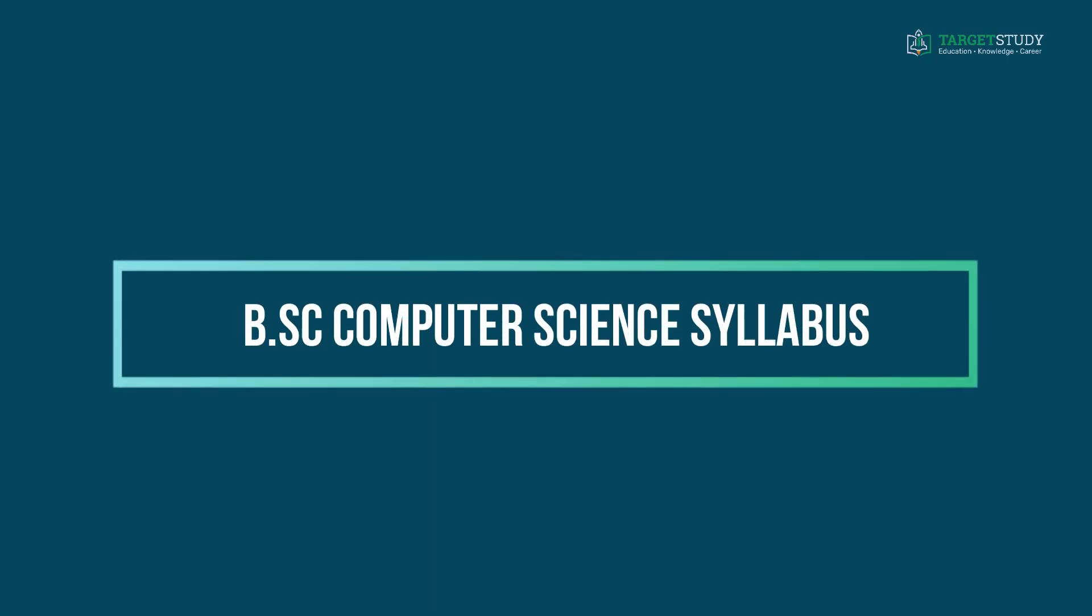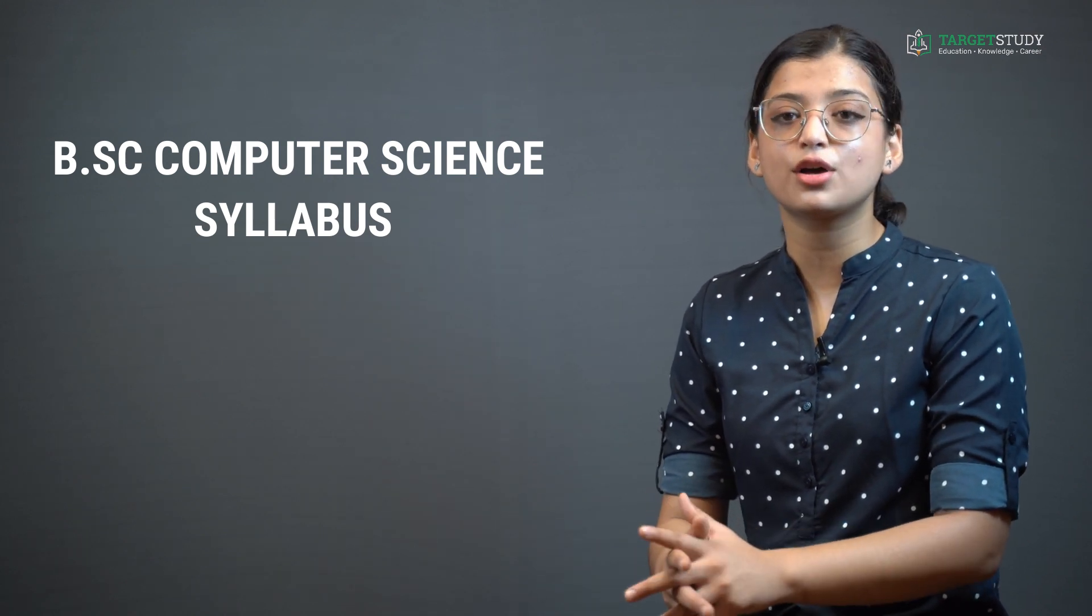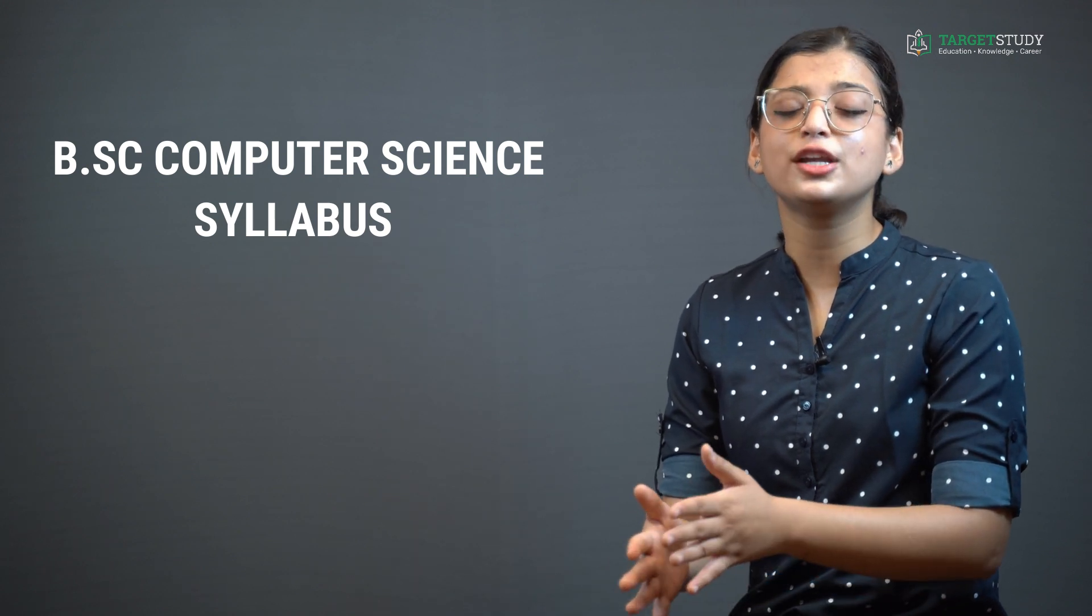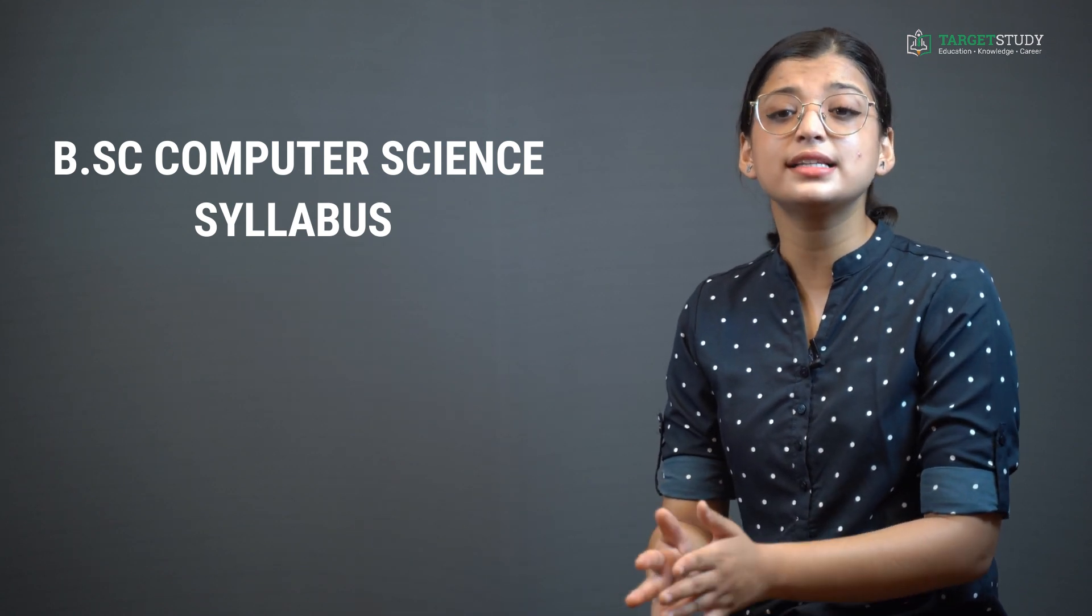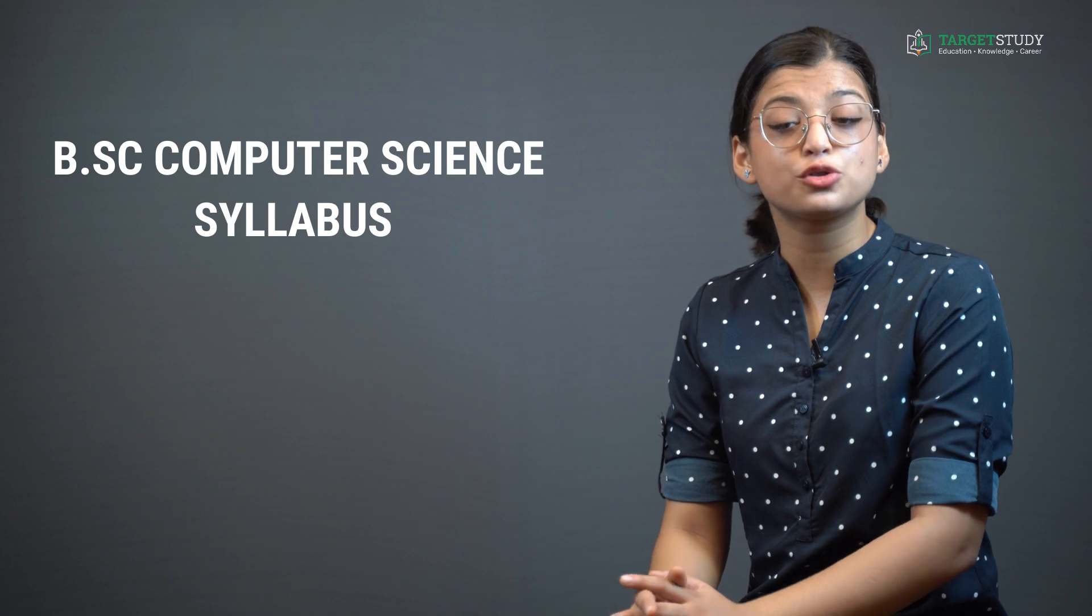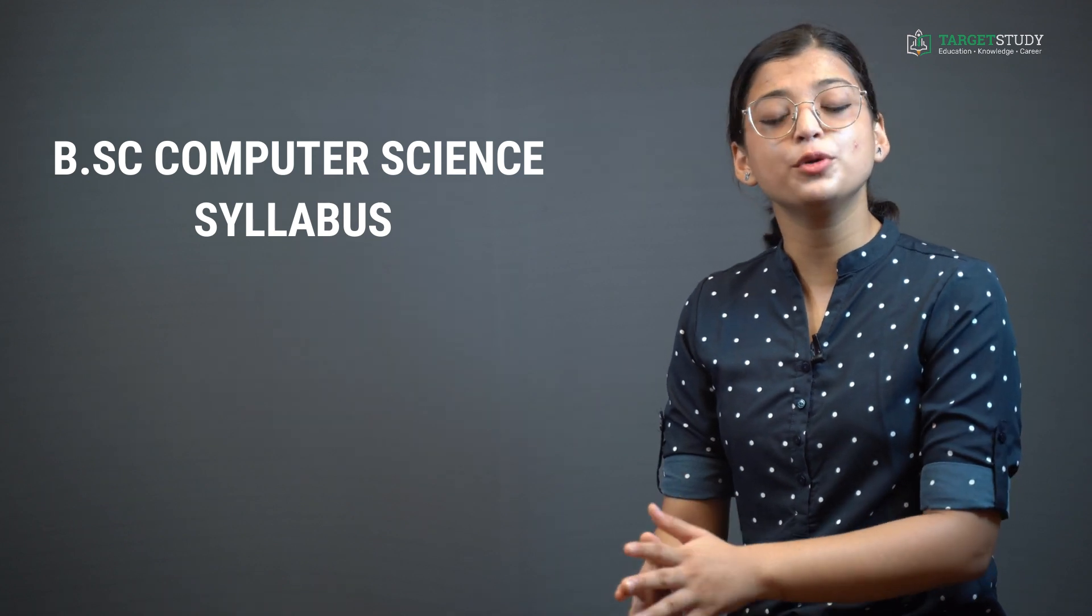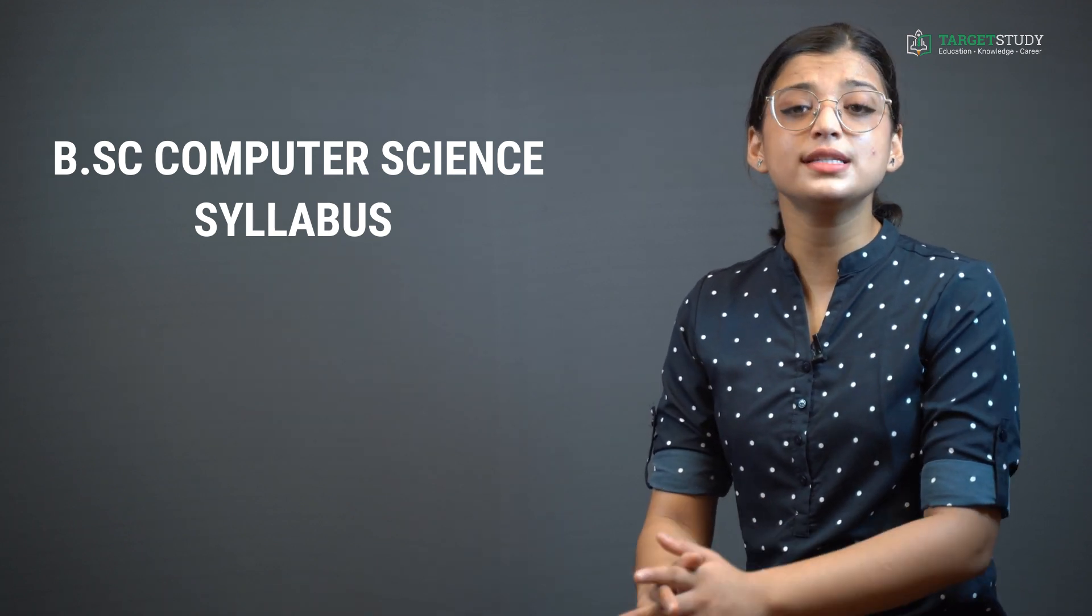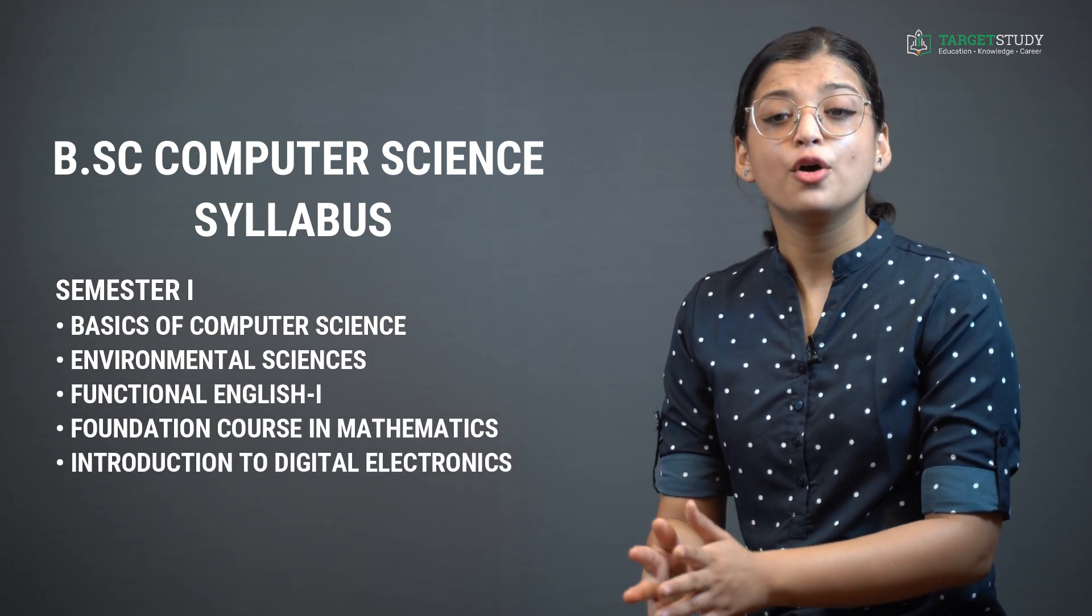Now you would like to know the syllabus of B.Sc Computer Science course. The three years full-time B.Sc Computer Science course has been divided into six semesters of six months each. The course curriculum is a mix of several theory exams, assignments, practical, laboratory work and numerous project works. B.Sc Computer Science course curriculum is designed in such a way that it covers all the important aspects to train the students to make a career in the computer science and software industry. In B.Sc Computer Science semester 1, you will study subjects like Basics of Computer Science, Environmental Studies, Functional English 1, Foundation course in Mathematics and Introduction to Digital Electronics.